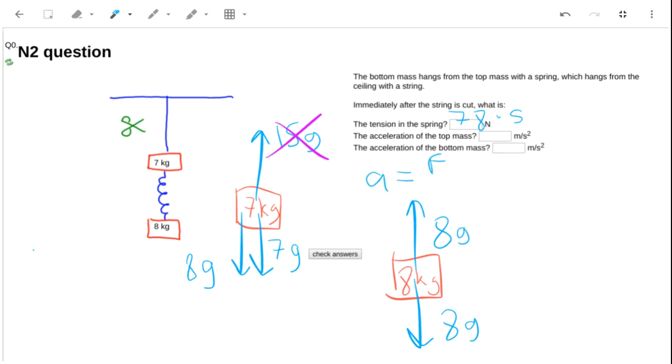The force is 15g downwards divided by the mass, which is 7. 15 times 9.81 divided by 7 gives me 21.0 meters per second squared. And the acceleration of the bottom mass is zero.